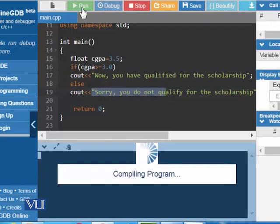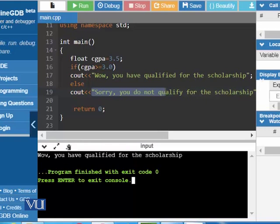Let us start. Wow, you have qualified for the scholarship. Let us change the CGPA to any value which is less than 3. Let us say 2.96.